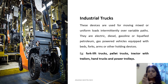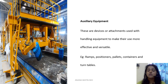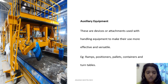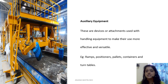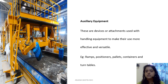These are the small vehicles which move in and around the organization. Then we have auxiliary equipment — these are equipment which are attached to the main machine. For example, on a conveyor belt you have different brushes which either wipe it clean or perform some other function. These are helping machines attached to the conveyor which facilitate the movement of materials, such as ramps, positioners, pallets, containers, and turntables.